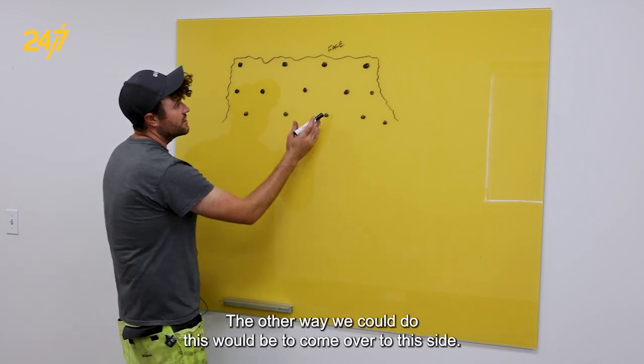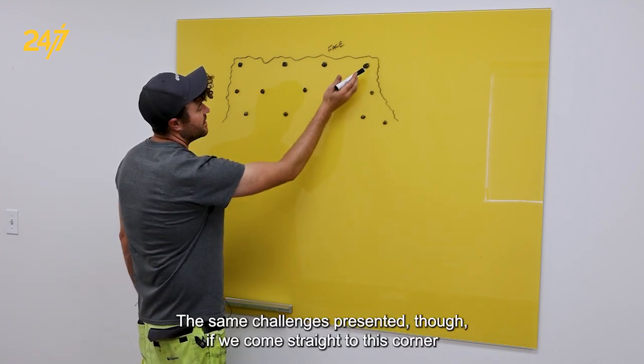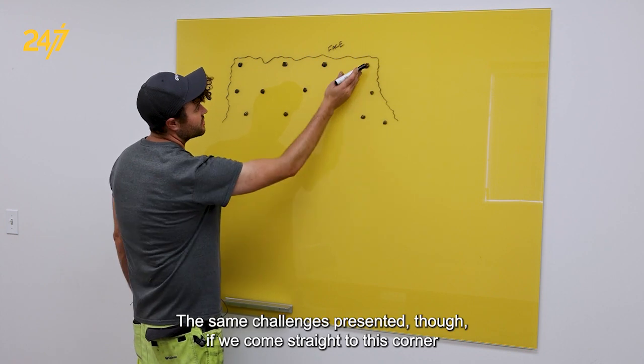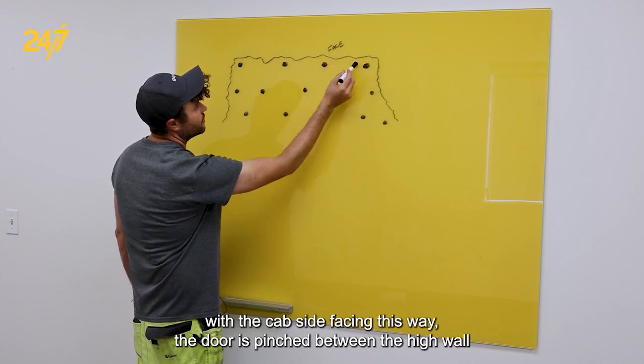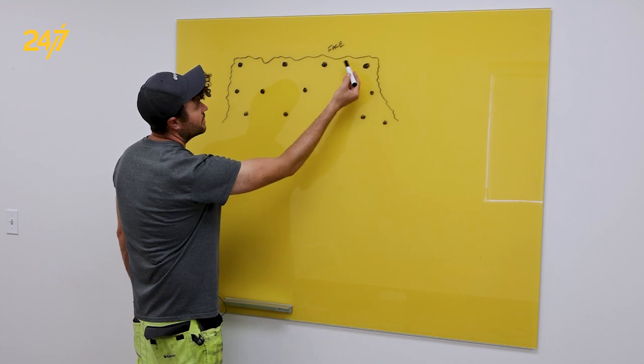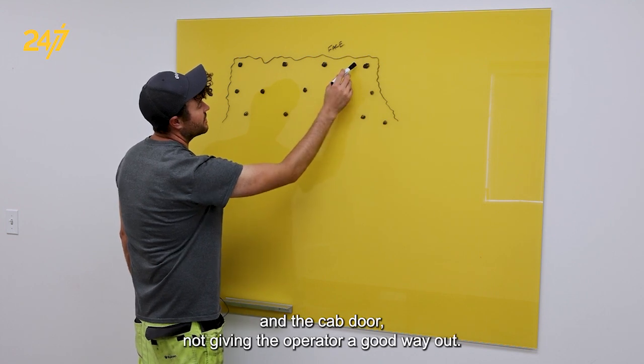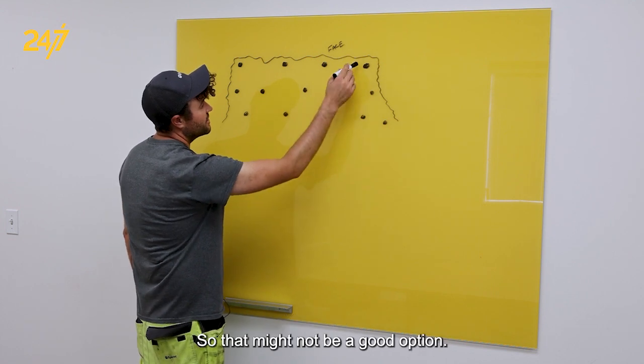The other way we could do this would be to come over to this side. The same challenge is presented though. If we come straight to this corner with the cab side facing this way, the door is pinched between the high wall and the cab door, not giving the operator a good way out. So that might not be a good option.